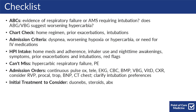As a chart check, look for the patient's home regimen, see about prior exacerbations, and whether or not they've needed to be intubated in the past. For admission criteria, if they have dyspnea, worsening hypoxia or hypercarbia, or they need IV medications, they should probably be treated in the hospital. Things you can't miss include hypercarbic respiratory failure or a pulmonary embolism.